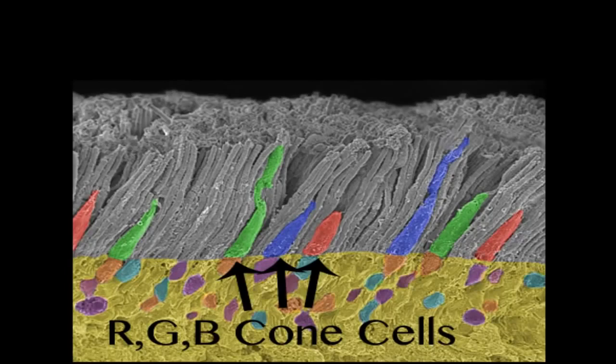Cone cells: Cone cells come in three different types, those which correspond to red, green, and blue wavelengths. This enables them to send information in color.